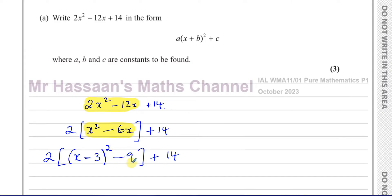I don't want the plus 9, so I put minus 9. That makes the expansion match the original. Even if it were x plus 3, you always take away the square of that last number — you always subtract the square of that number. Now we've completed the square for the part inside the bracket, and we want to write the full expression in the required form.